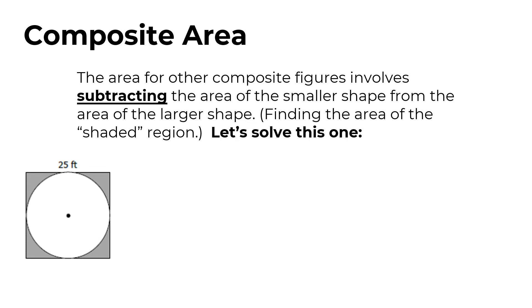Now let's look at an example where we subtract. Here we want only the area of the gray part. There are two shapes involved: a square and a circle. The gray part is part of the square, but the circle is cut out of it — like a hole-punch in a card. So we figure out the area of the complete square, then subtract the area of the circle. That leaves us just the gray remainder.